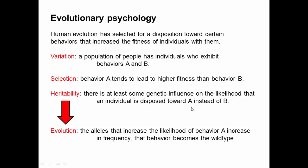We're not necessarily thinking about black-and-white traits where individuals will always do behavior A or always do behavior B. It can be more subtle, where there's a genetic influence that makes a particular individual more likely to do behavior A than behavior B. That would still be selected if doing behavior A resulted in a better outcome more than doing behavior B.